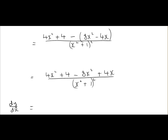Finally, we simplify it down as much as possible, so we have 4x² minus 8x² gives us minus 4x² plus 4x plus 4, all over x² plus 1 to be squared. And that's our final answer.